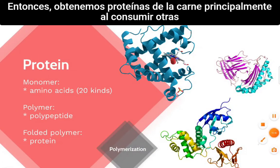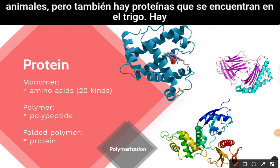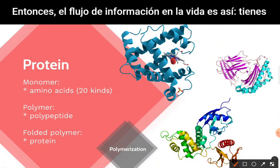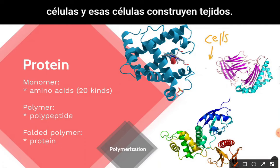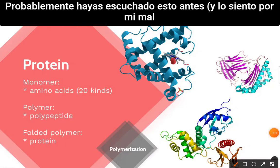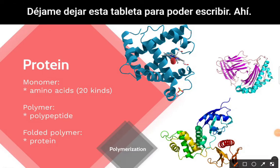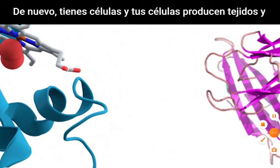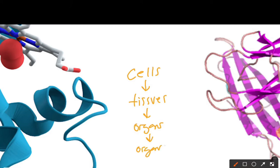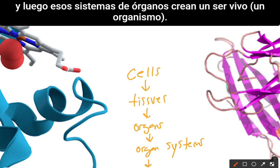We get proteins primarily from meat by consuming other animals, but there are also proteins found in wheat, plants, and everything that is alive. The flow of information in life goes: cells build tissues, tissues build organs, organs build organ systems, and organ systems make a living organism.